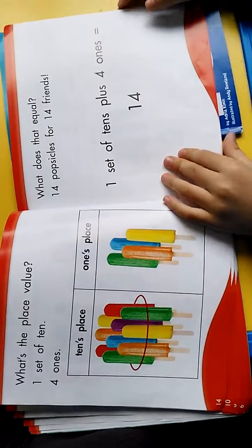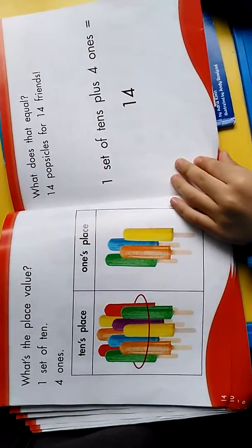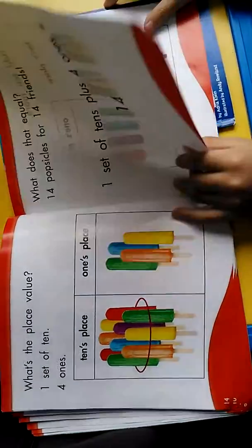What does that equal? Fourteen. One set of ten plus four ones equals fourteen.